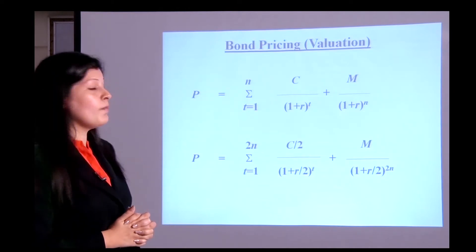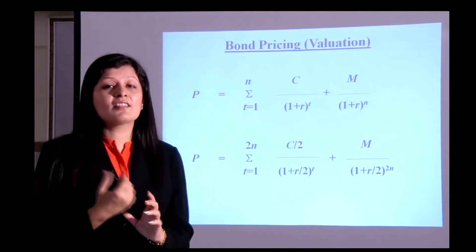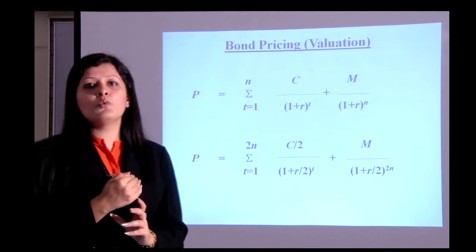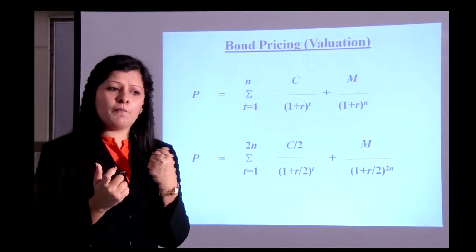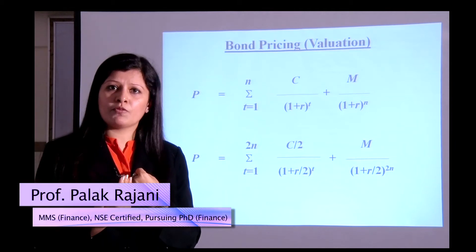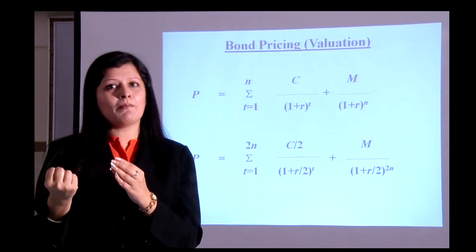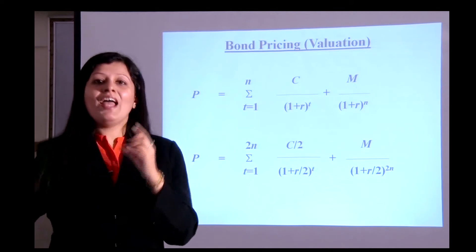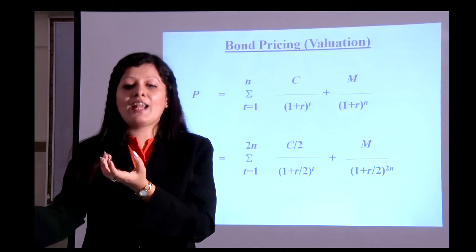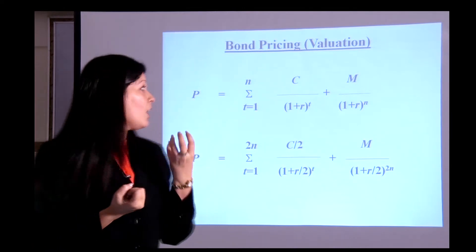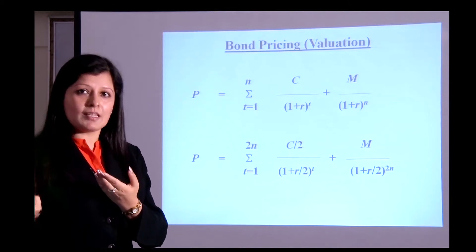Now, how do we value a bond? If a bond is priced at 80, is that the right price to buy? What is the true intrinsic value? We use bond valuation techniques. The future cash flows from a bond are: interest payments received over the bond's life, and the principal amount at maturity. Using the time value of money concept, we discount these future cash flows.